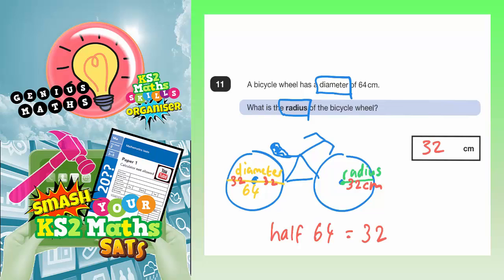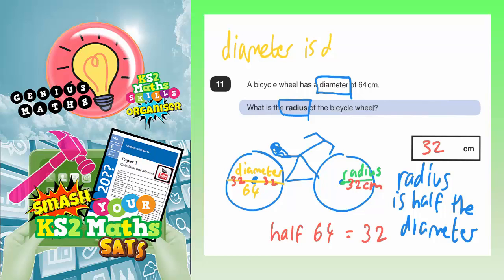So the key knowledge there is just to know that the radius is half the diameter. Another way of saying that is that the diameter is double the radius. Both of those facts are true. The radius is half the diameter and the diameter is double the radius. Half of 64 which is the diameter gives you the radius which is 32. Final answer 32 centimeters.